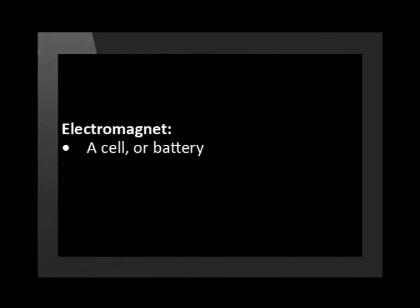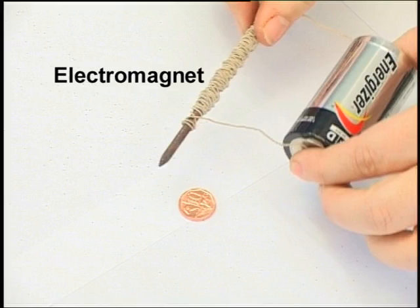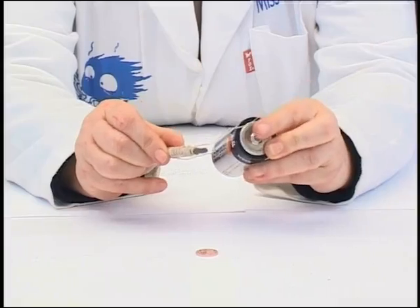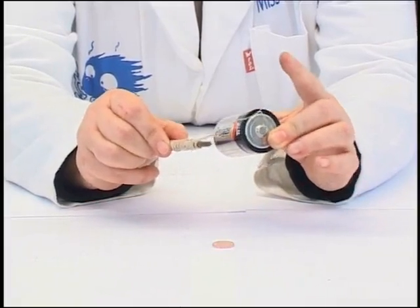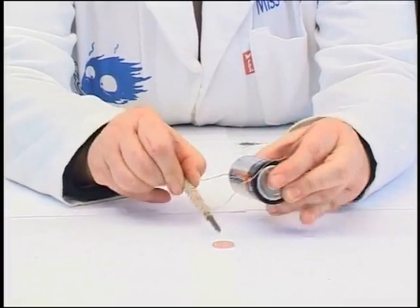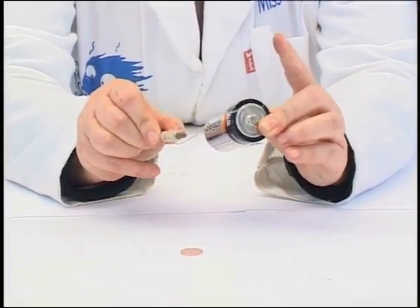So far so good — that was a quick recap of magnetism. Now, can we make a magnet of our own? Yes! To make an electromagnet we use a cell or battery, wire, and a nail to wrap the wire around. Here is an electromagnet I prepared earlier. When I attach the wires to the battery, the nail is now magnetic and attracts the coin. If I detach the wires, the coin drops.